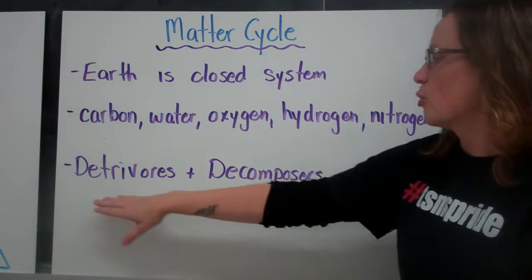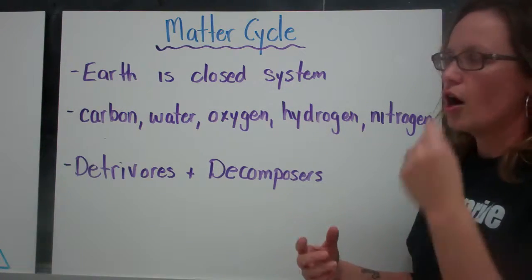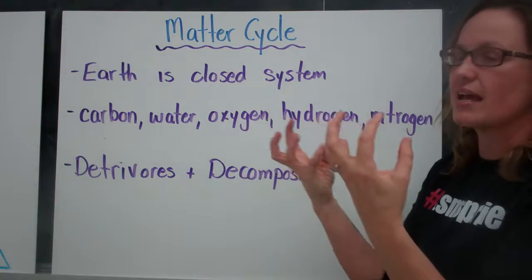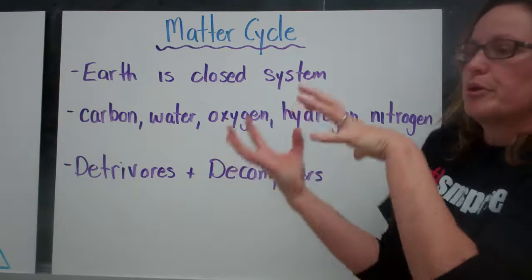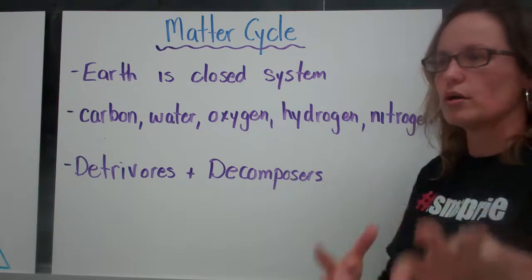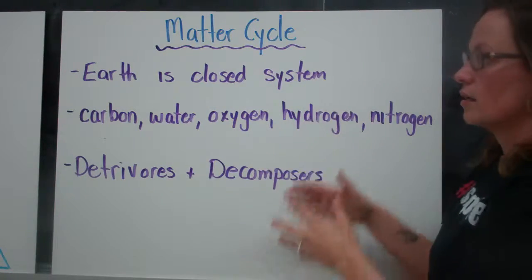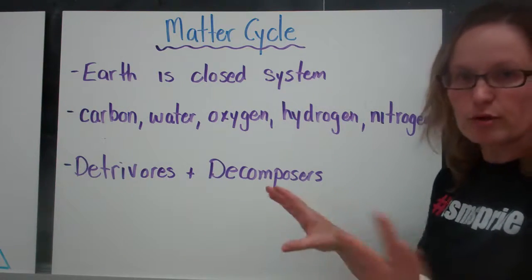So our detrivores and decomposers are our natural ability to take that energy from those organisms and break it down and put it back into the earth and back into the soil to then recreate that bottom of our pyramid, recreate those producers.